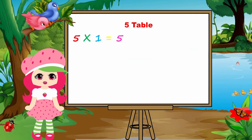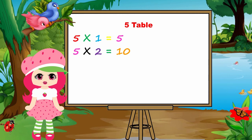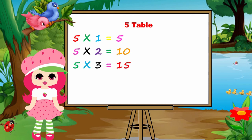Five ones are five. Five twos are ten. Five threes are fifteen.